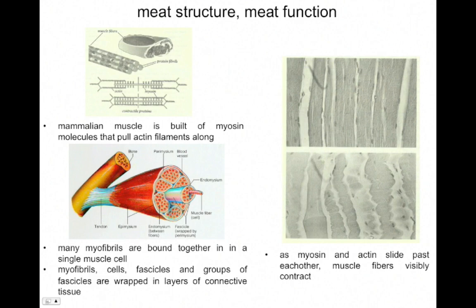Mammalian muscle is built of myosin molecules that pull actin filaments along. This gray tube represents one kind of protein called myosin — a molecular machine that ratchets its way along these other protein molecules called actin filaments, using ATP as an energy source for driving molecular motion that winds up pulling one molecule across the other. That, at the molecular level, is muscle contraction. As one molecule draws itself along the other, we go from this extended structure to this contracted structure.